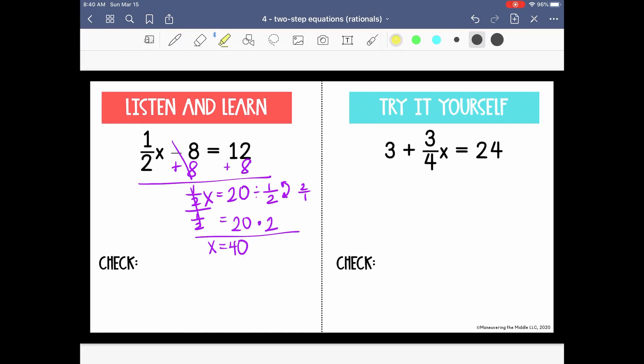So you can always check your answer by substituting it back in for the variable. So let's check to see if we're correct. We want to see if 1 half times 40 minus 8 is actually 12. So let's work through. 1 half of 40 is 20. Copy down the rest. And now 20 minus 8 is 12. So we know that we are correct. 12 equals 12. That's true. So in this first equation, x equals 40. Awesome.